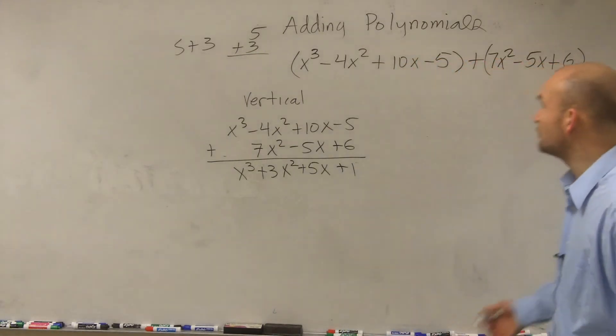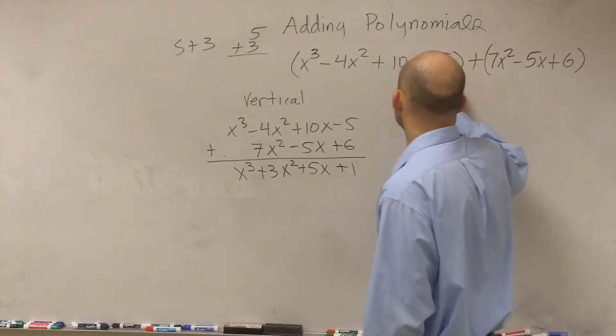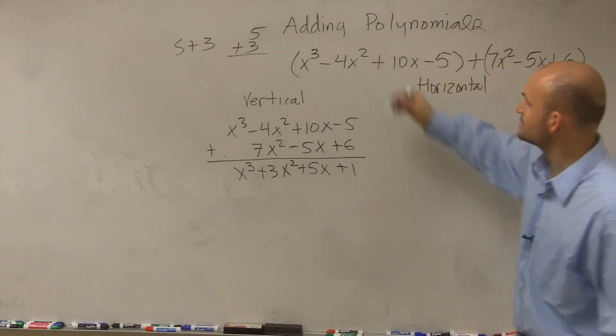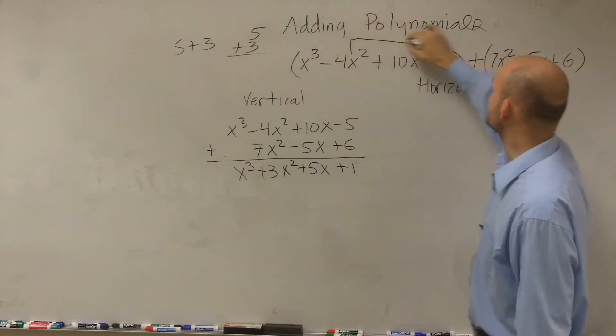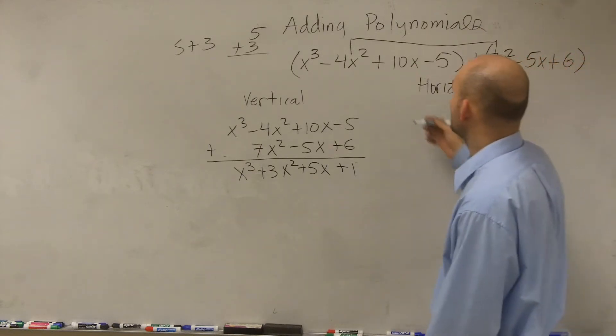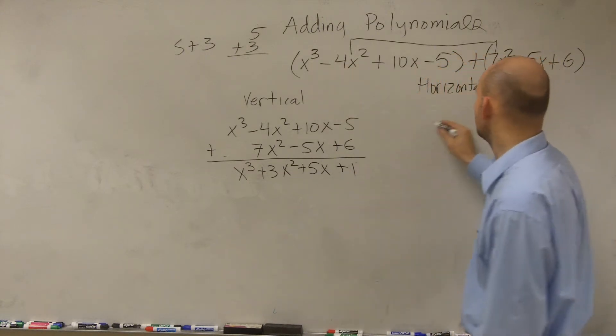what we can do is also what we call the horizontal method. On the horizontal method, all you're really doing is combining your terms horizontally. So you have negative 4x² plus 7x², and x³ doesn't go with anything, so you just rewrite it.